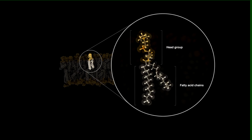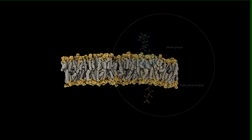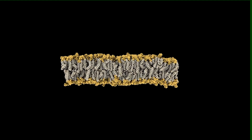The head groups are hydrophilic, meaning water-loving. They form weak bonds with the surrounding water. The fatty acid chains are hydrophobic, meaning water-fearing. They do not dissolve in water and are actually excluded from water because of the weak attraction of water molecules for each other. The hydrophilic and hydrophobic characteristics of the phospholipids keep the membrane intact without requiring any energy on the part of the cell.